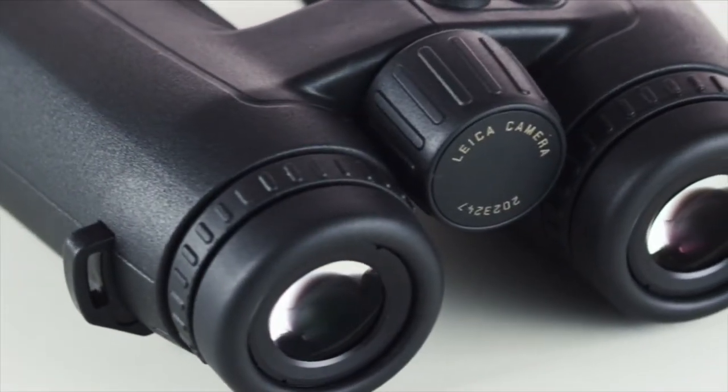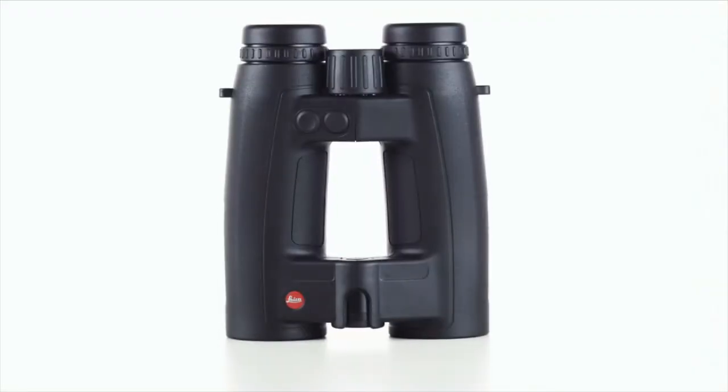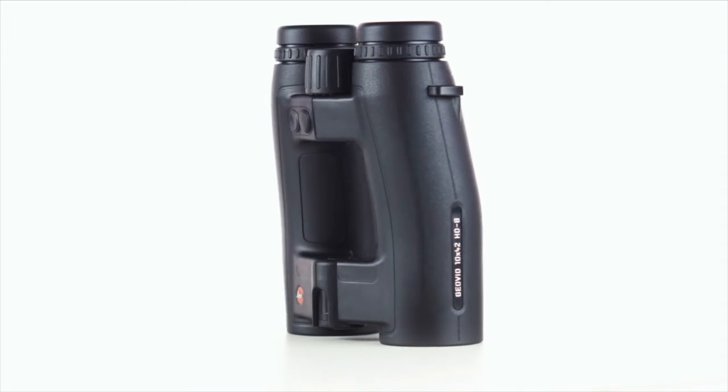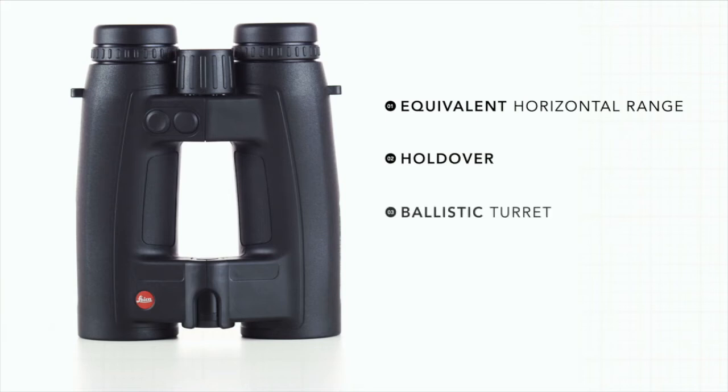This function takes your specific ballistic curve, uses real-time data from the onboard thermometer, inclinometer, and station pressure gauge, and delivers a precise ballistic compensation in one of three outputs: equivalent horizontal range, holdover, or ballistic turret.